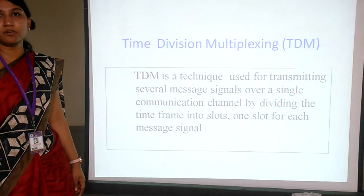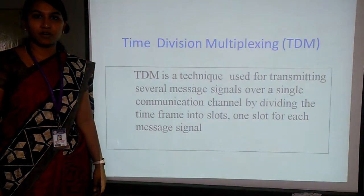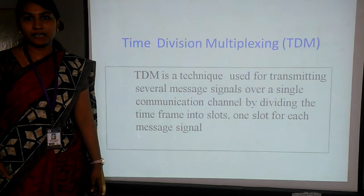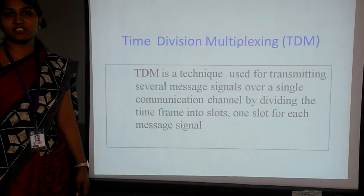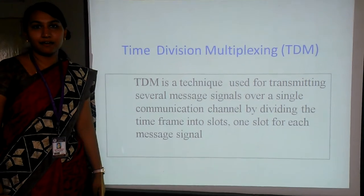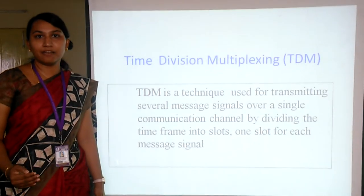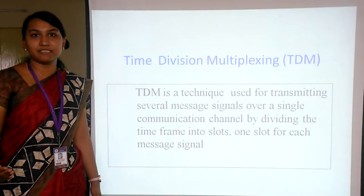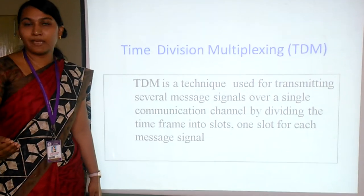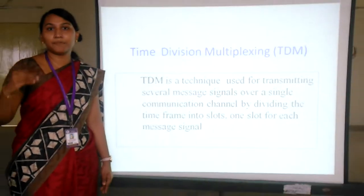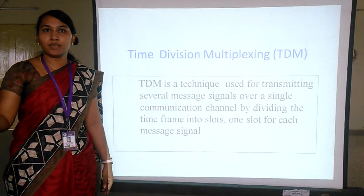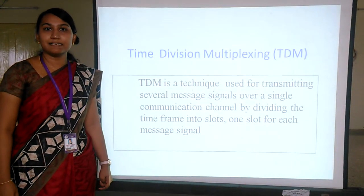First we will see what pulse amplitude modulation is. Pulse amplitude modulation is a modulation technique — a pulse modulation technique — where the carrier contains a train of rectangular pulses varying in accordance with the amplitude variation of the message signal. This is how we obtain the pulse amplitude modulated signal.